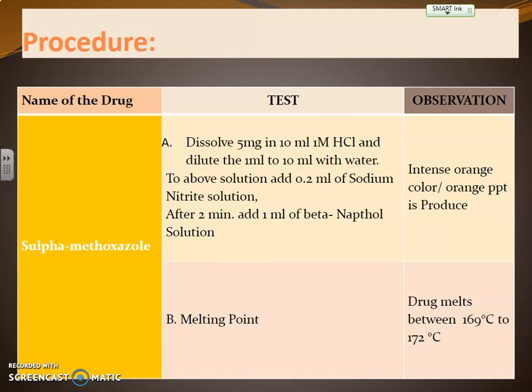The first identification test: dissolve 5 mg of the drug in 10 ml of 1 molar HCl, dilute 1 ml of this solution to 10 ml with water. To the diluted solution, add 0.2 ml of sodium nitrite solution, and after 2 minutes add 1 ml of beta-naphthol solution. The observation should be an intense orange color or orange precipitate is produced — if so, the test complies.